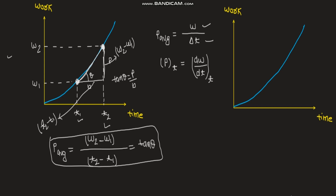Now, in the case of instantaneous power, we are interested in knowing the work done at a single point in time. For example, at time t1, we want to know the power at that exact instant. We know that power at a particular time t is equal to dw/dt at that time t1.